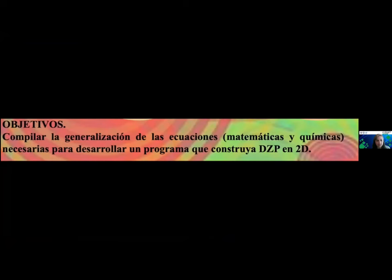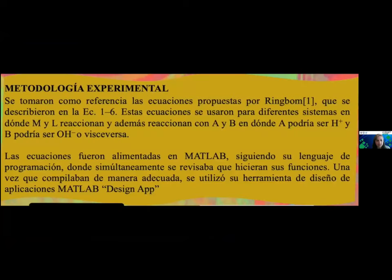Para la metodología, se tomaron como referencia las ecuaciones propuestas por Ringbaum, que se describieron en la ecuación 1 a 6. Estas ecuaciones se usaron para diferentes sistemas en donde M y L reaccionan y además reaccionan con A y B, en donde A podría ser el ion hidróneo y B podría ser el ion hidróxido o viceversa. Las ecuaciones fueron alimentadas en MATLAB siguiendo su lenguaje de programación, donde simultáneamente se revisaba que serán sus funciones y una vez que compilaba de manera adecuada, se utilizó su herramienta de diseño de aplicaciones MATLAB Design App.